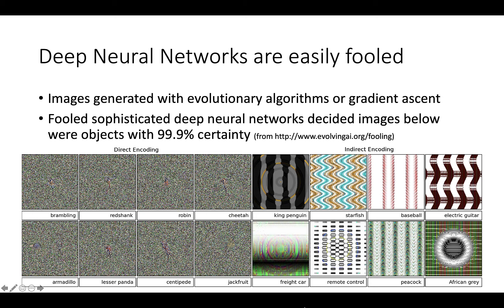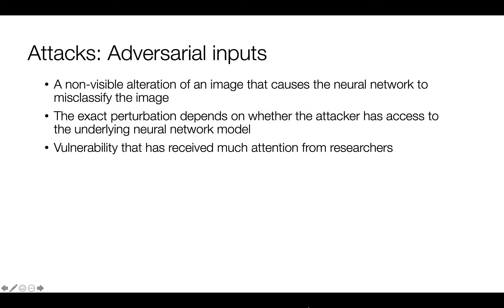Clearly those aren't the things the machine learning models think they are. When looking at attacks, we can look at adversarial inputs — a non-visible alteration of an image that causes the neural network to misclassify it. The exact perturbation depends on whether the attacker has access to the underlying neural network model and the data used to train it. This vulnerability has received an awful lot of attention from researchers, because it's easy to do and you can get results quickly.